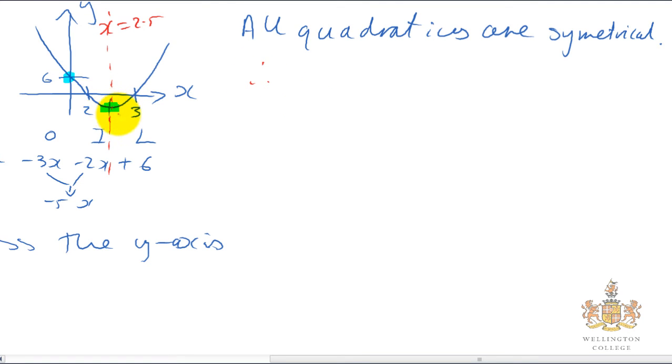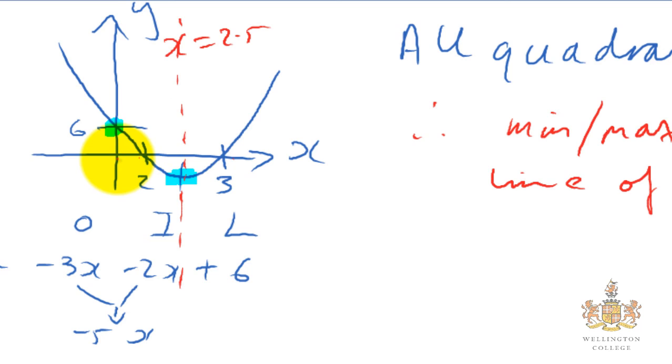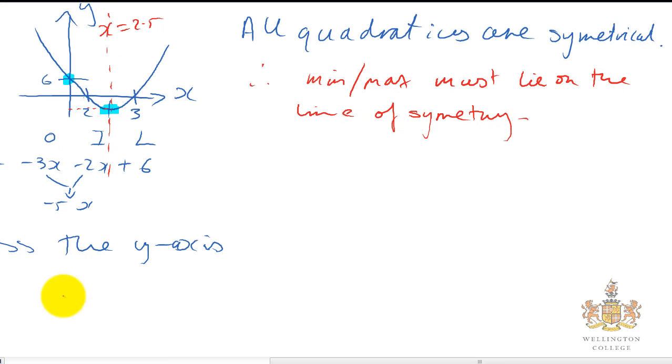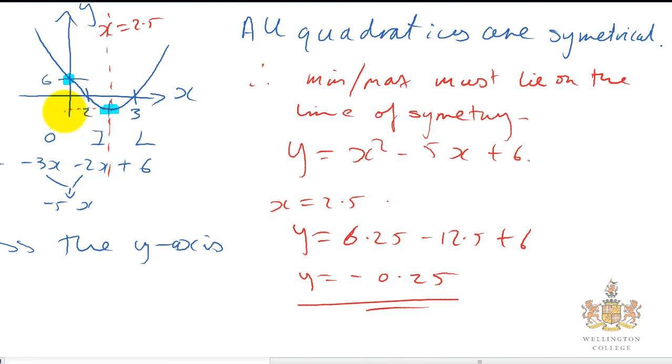So therefore, the minimum, or if it was a u-shape, the maximum point, must lie on the line of symmetry. And we know that the line of symmetry is exactly halfway between the two values where the graph crosses the x-axis. And we can find the y value now by putting it into our equation. So we've got y = x² - 5x + 6. So we can put x = 2.5 into that. And we get y = 2.5², which is going to be 6.25, minus 5 times 2.5, minus 12.5 plus 6. So that will give us y equals minus 0.25 when you add all these terms up.